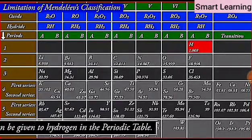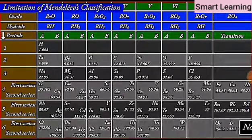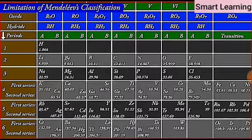Certainly, no fixed position can be given to hydrogen in the periodic table. This was the first limitation of Mendeleev's periodic table. He could not assign a correct position to hydrogen in his table.